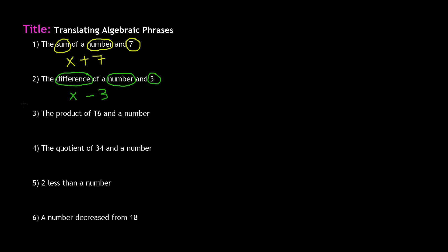So we circle: product, 16, and a number. One way to write this is 16 times n — using n here since x could be confusing with a multiplication sign. You could also write this as 16 dot n, where the dot represents multiplication. Or the more common way is simply 16n — no symbol in between. So 16n tells us we're multiplying a number by 16. This is the most common form, but the other two ways are also valid.